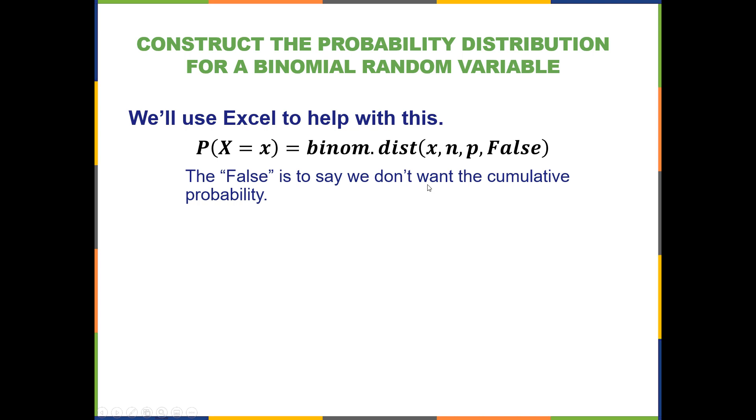it's because we're telling it we don't want the cumulative probability. It's going to basically ask us, do you want this to be cumulative? And we're going to say no because we want it to be an exact number of successes. So this reads the probability that the random variable X takes on a specific number that we specify.